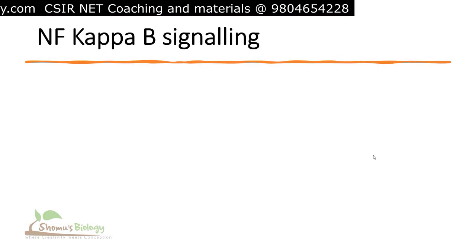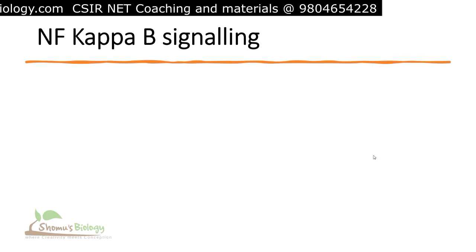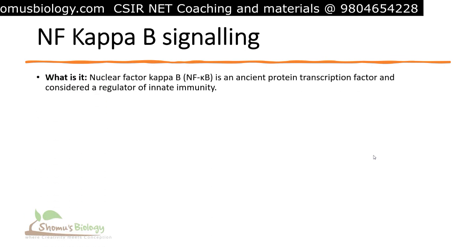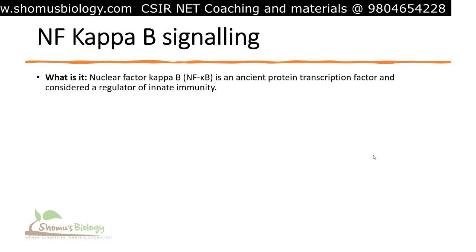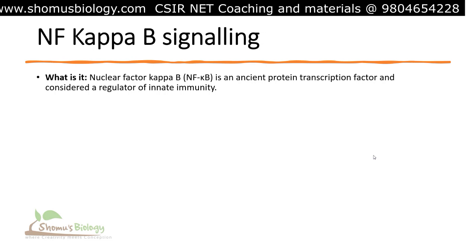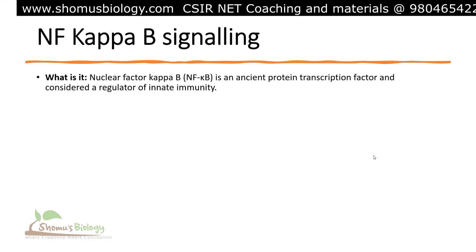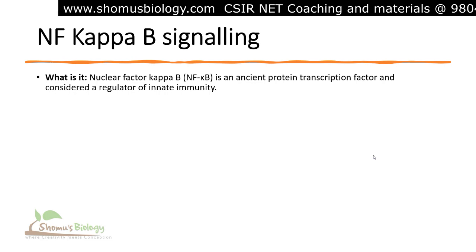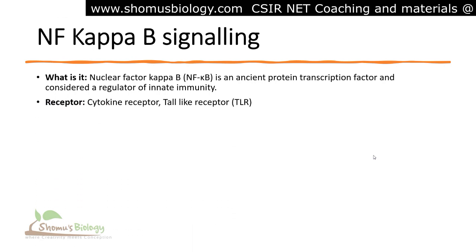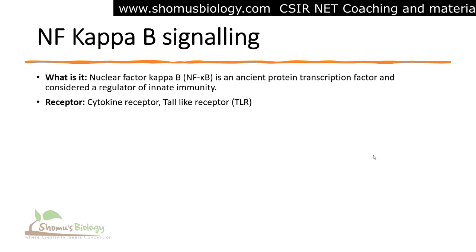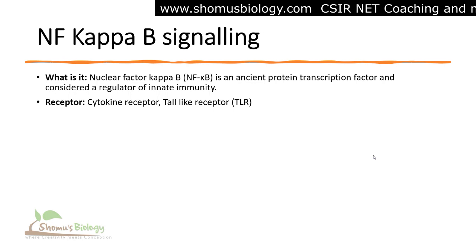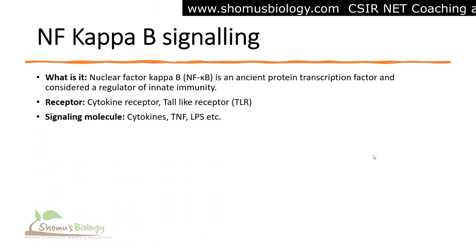Let's talk about the basics of NF-kappa-B signaling. The nuclear factor kappa-B, or NF-kappa-B, is an ancient protein transcription factor considered a regulator of innate immunity in our body. The receptor for NF-kappa-B signaling is a cytokine receptor like the Toll-like receptor. Signaling molecules are cytokines,